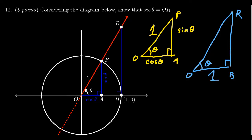RB is not labeled. It is tangent, but we won't use that. We want to compute OR and show it equals secant using similar triangles.